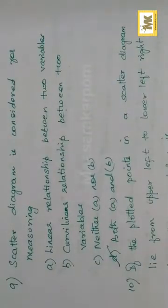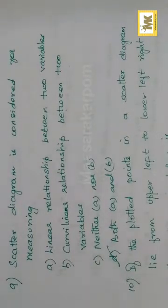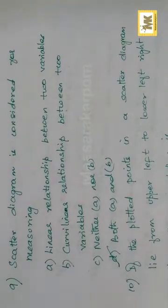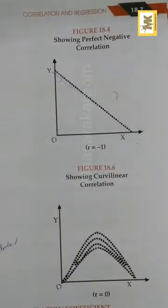Next — scatter diagram is considered for measuring linear relationship between two variables and curvilinear relationship between two variables. Both A and B. You can refer page 18.7 in your book.